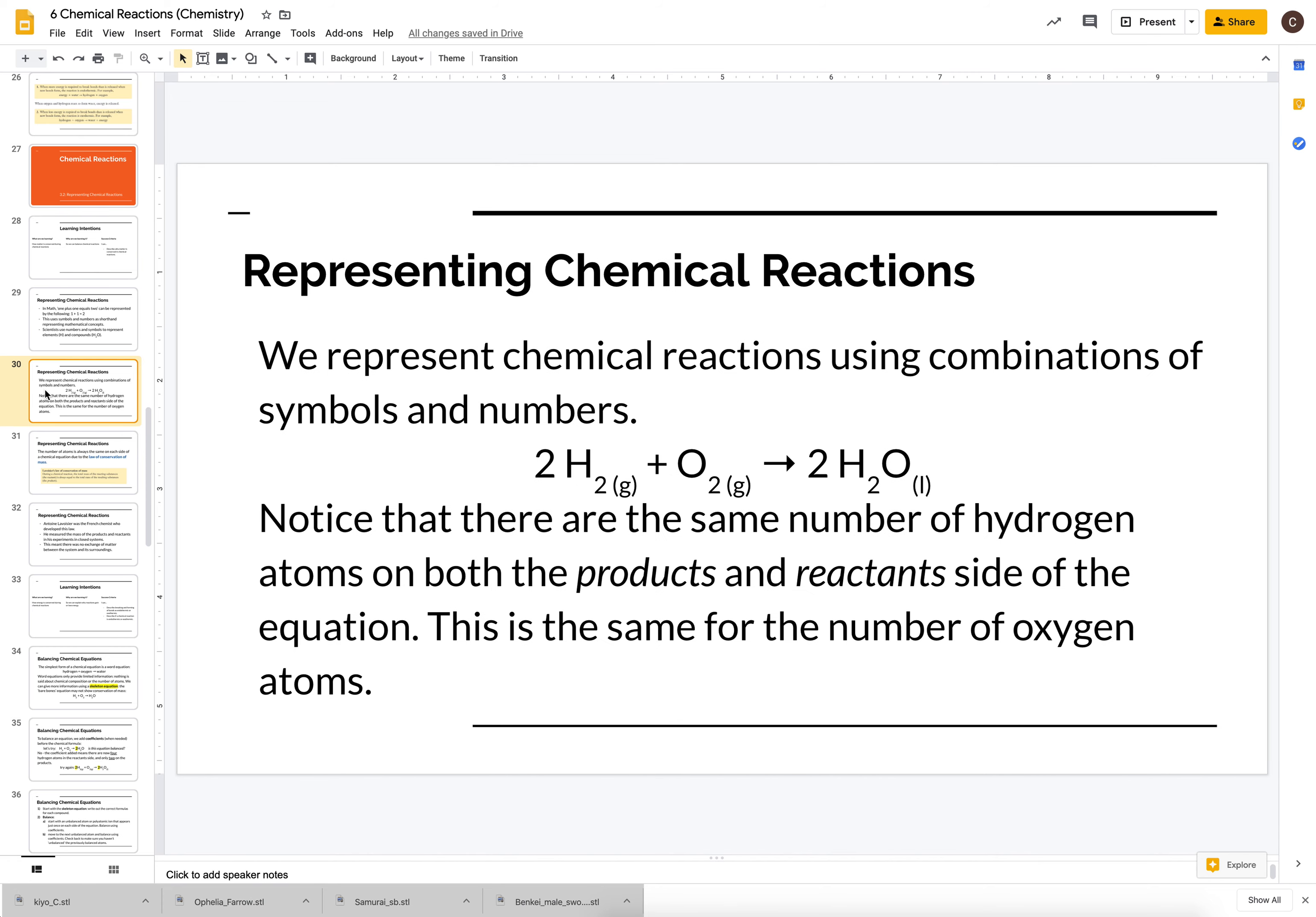So chemists will represent reactions using numbers and symbols as well. Now an important thing about this is that we do use plus signs just like we do in math, but the plus sign in chemistry really means 'and this.' It's not actually an addition of two things together. It's saying that all of these particles need to be present for the reaction to take place.